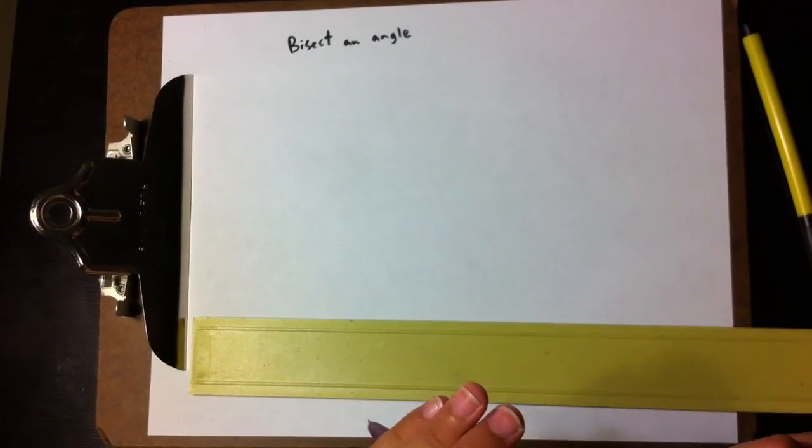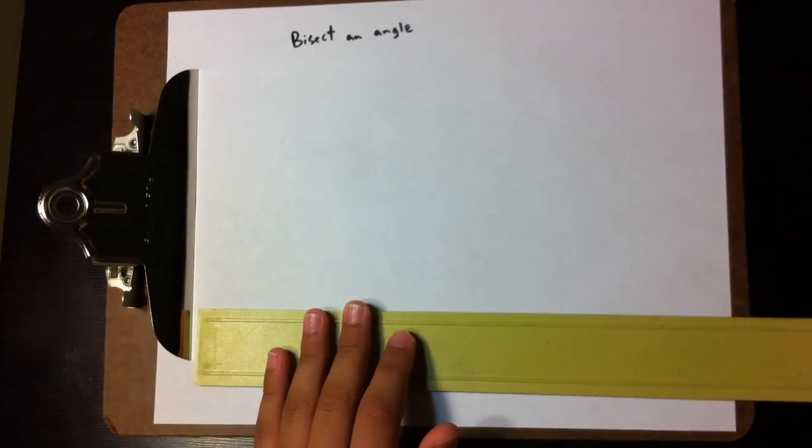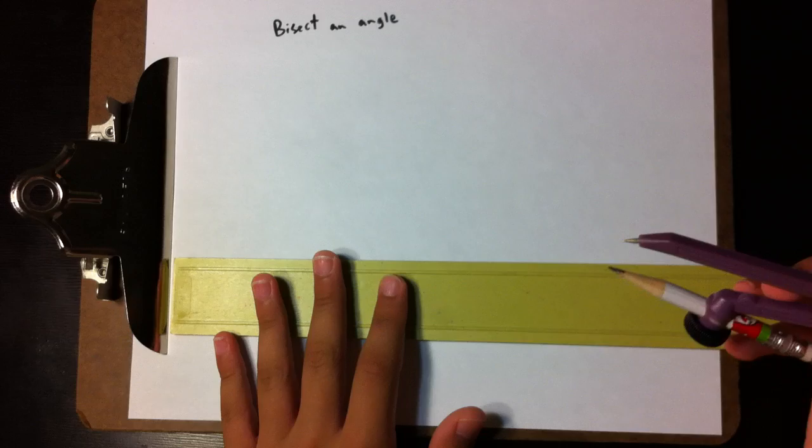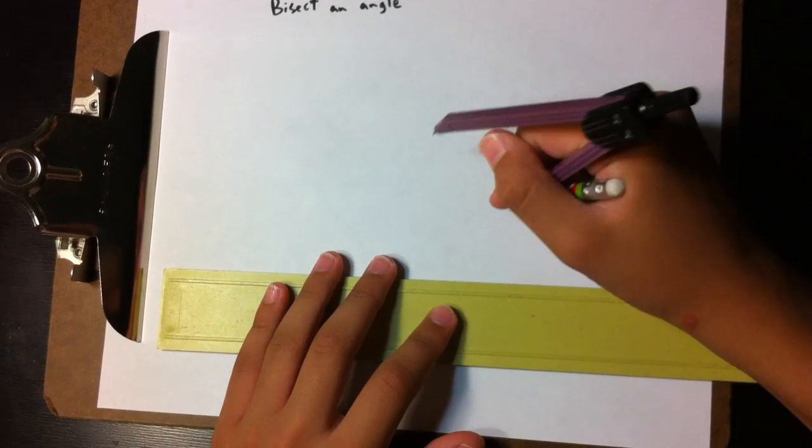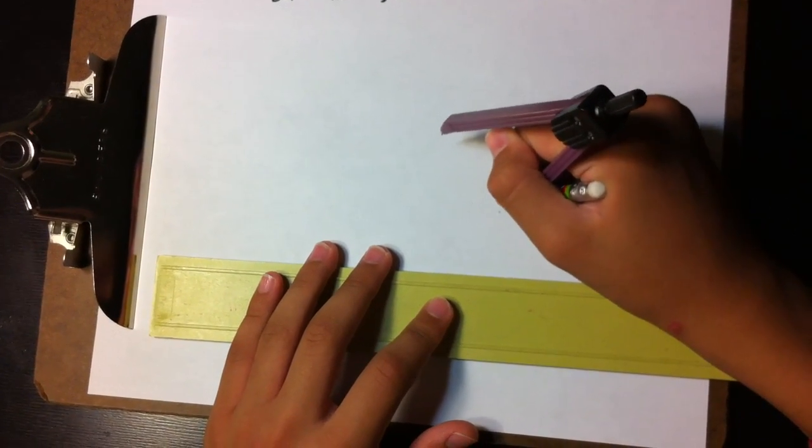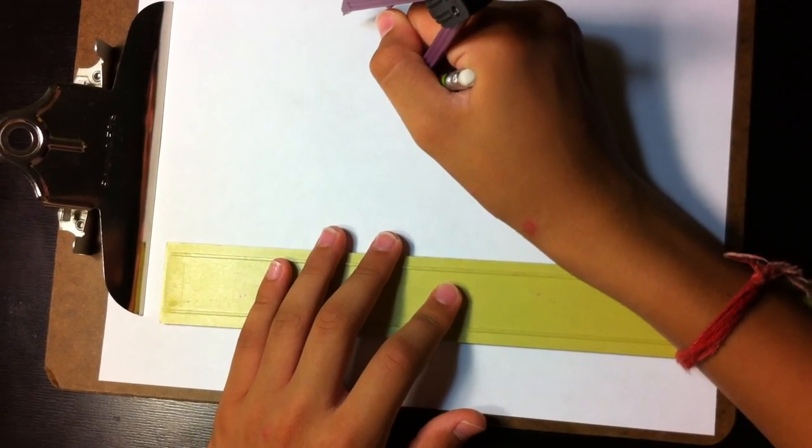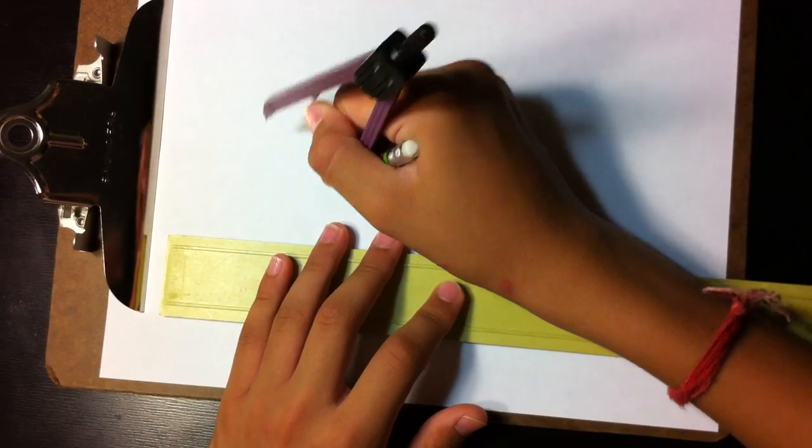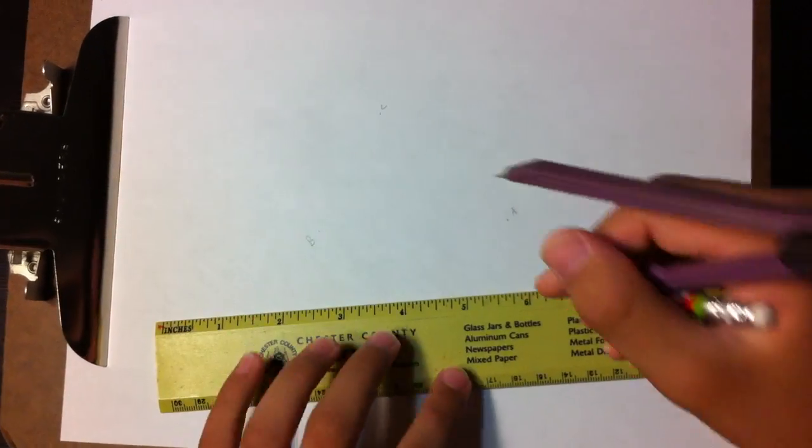So again, you have your straightedge, compass, and your marker. Markers are awesome. And so you're just giving random points A, B, and oops, B and C, connecting.